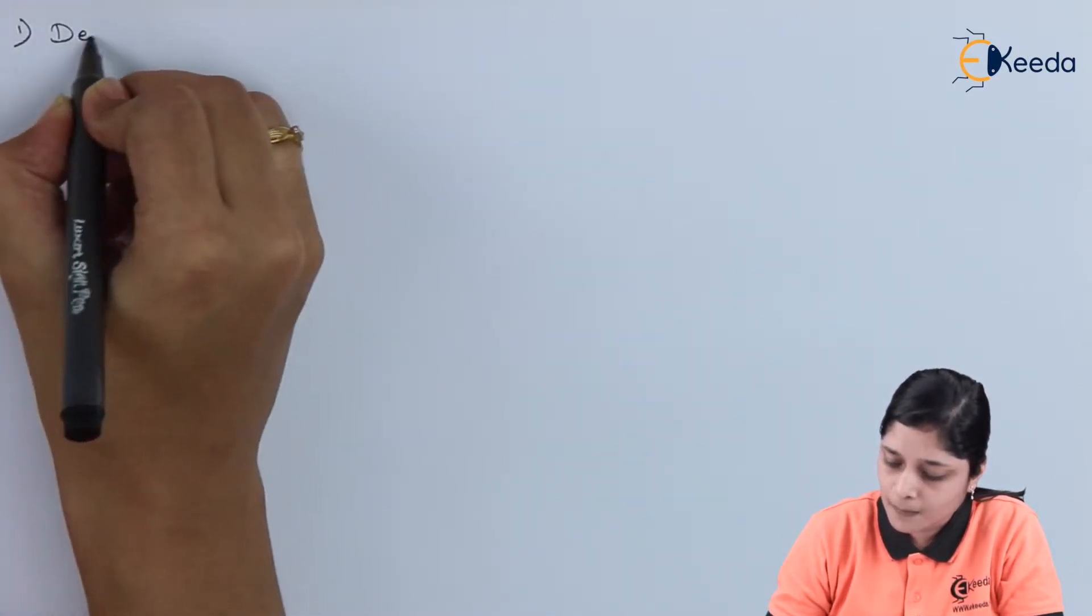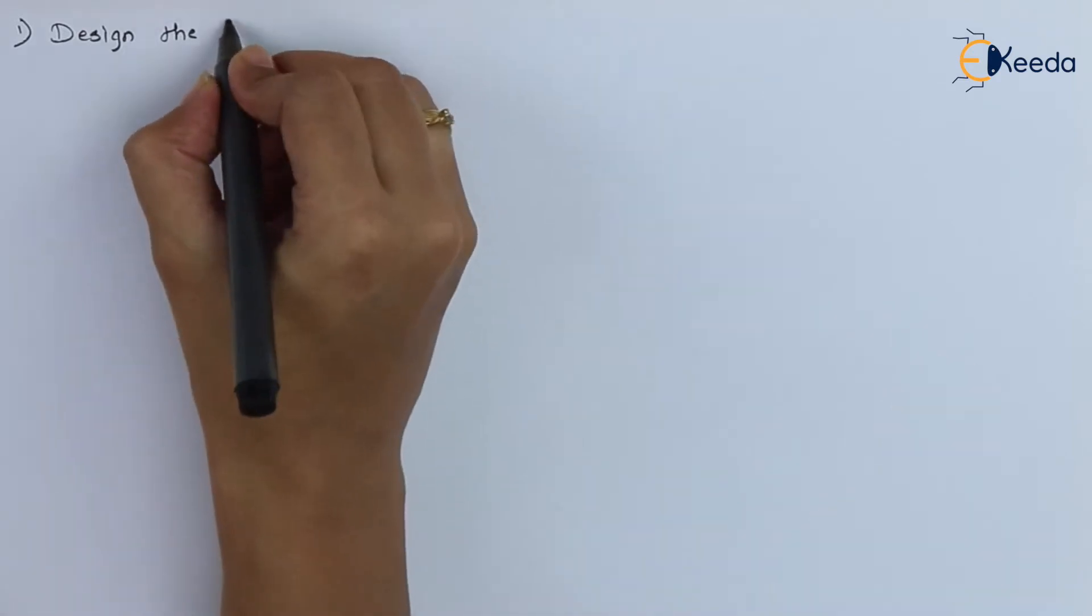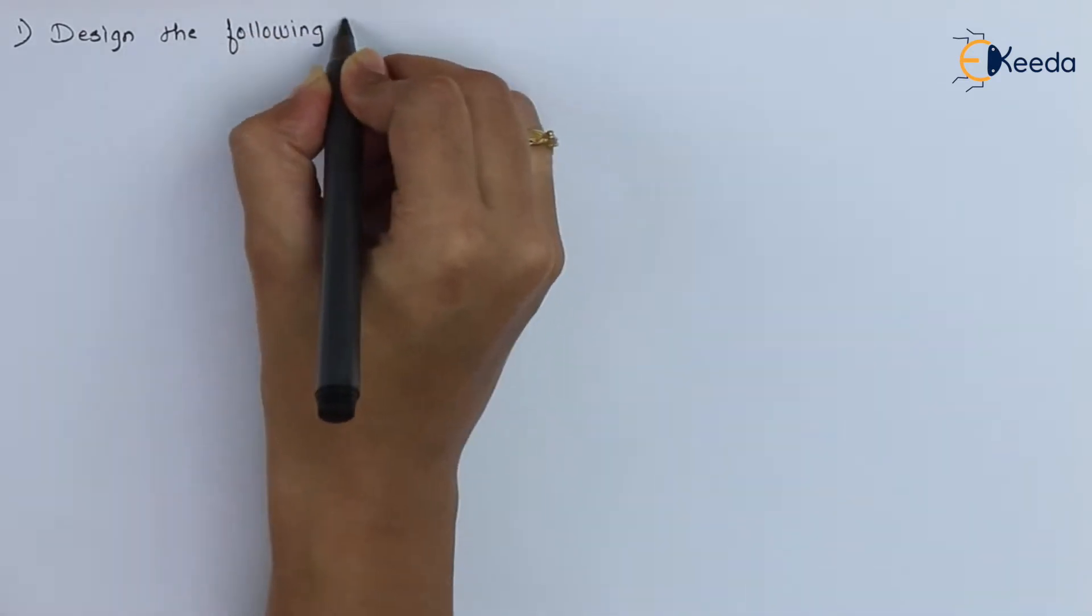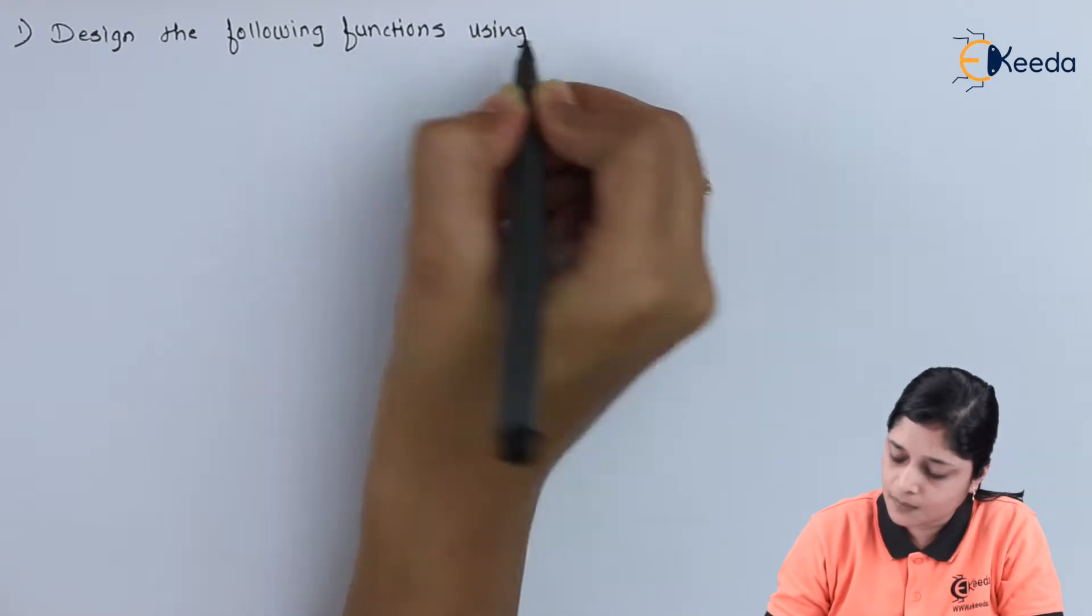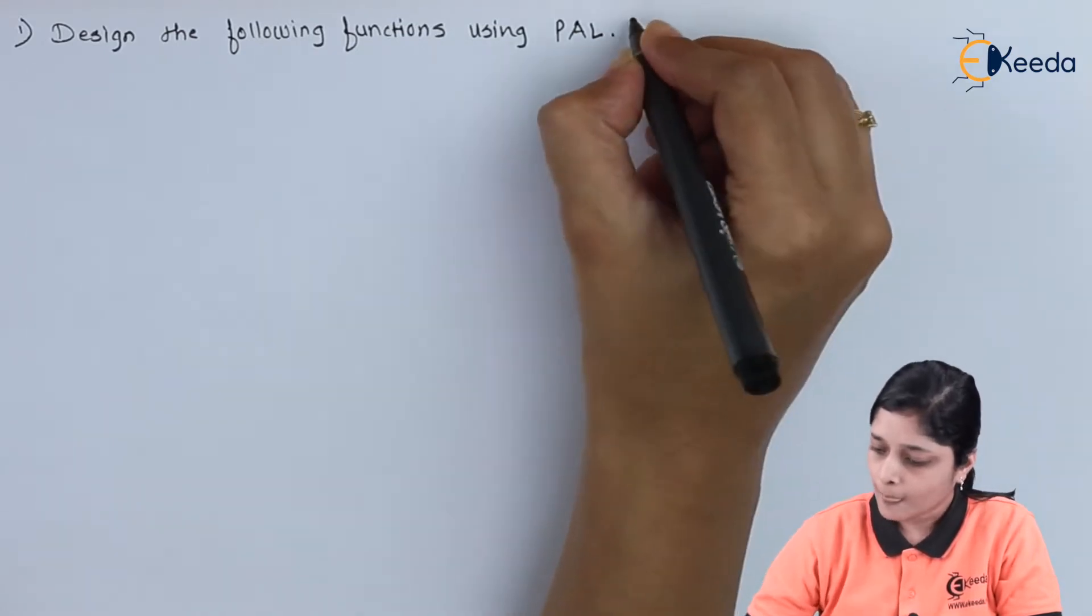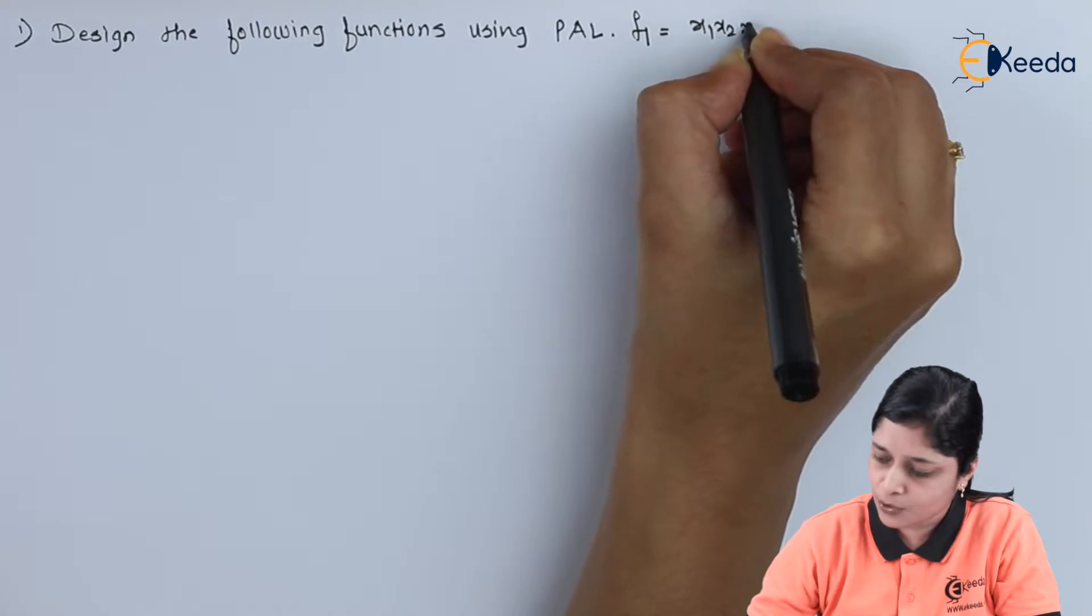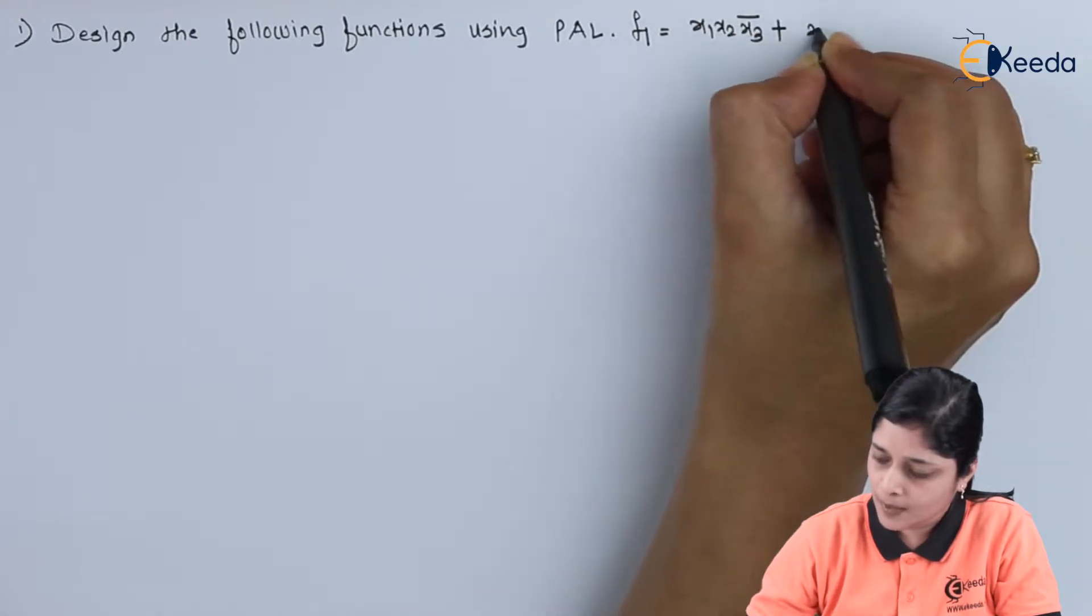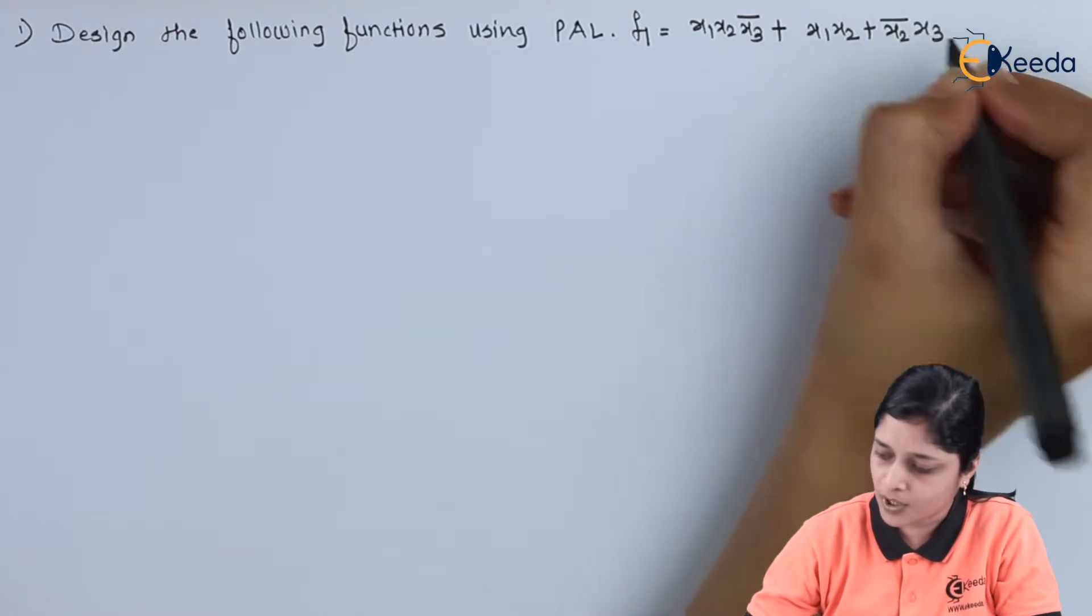Your example is, design the following functions using PAL and the functions are f1 equals to x1 x2 x3 bar plus x1 x2 plus x2 bar x3.